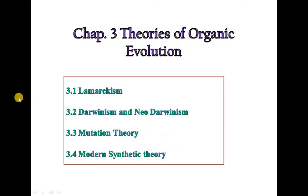In this topic, we are supposed to learn four important theories of organic evolution: Lamarckism, Darwinism, Mutation Theory, and the fourth one is Modern Synthetic Theory which is also called Neo-Darwinism. In the first session, we are going to learn Lamarckism and Darwinism.